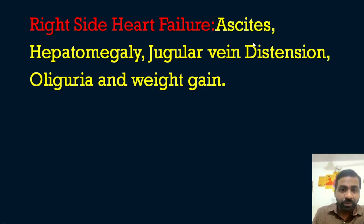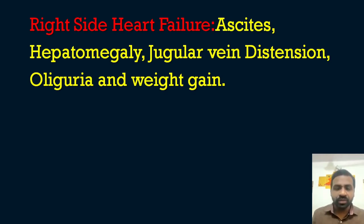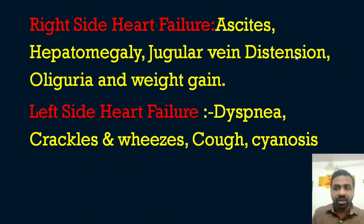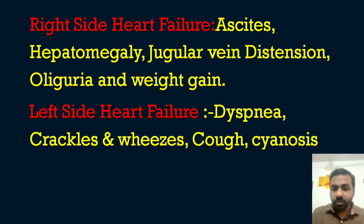Right-sided heart failure is characterized by collections and enlargement: ascites (fluid collection), hepatomegaly, jugular venous distension, oliguria (reduced urine output), and weight gain due to fluid retention. Left-sided heart failure presents with pulmonary features: dyspnea, crackles and wheezes on auscultation, cough, and cyanosis. Right-sided = fluid collections; left-sided = pulmonary symptoms.